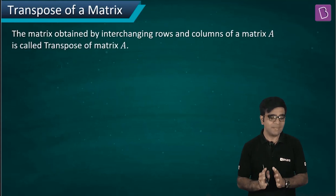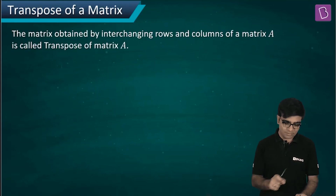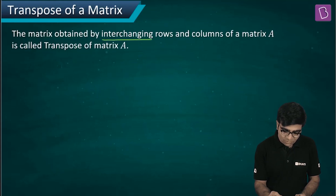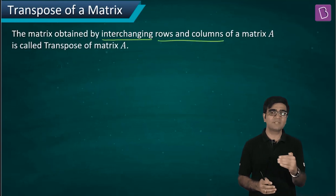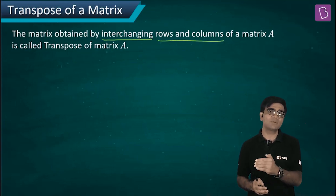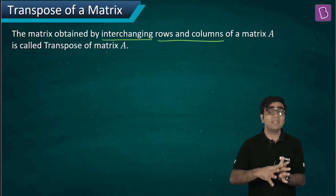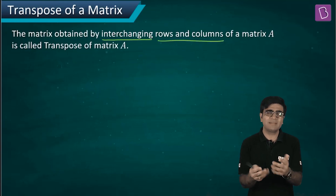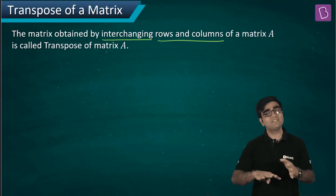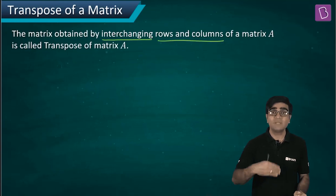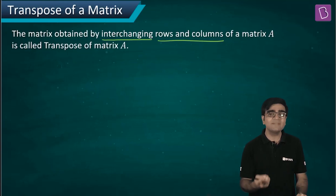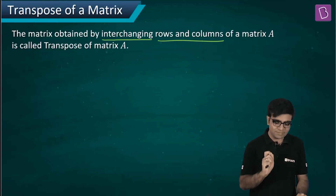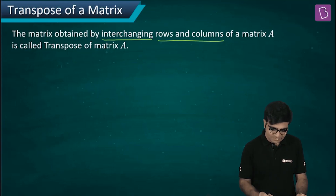Please note the statement: the matrix obtained by interchanging rows and columns. So the first row becomes the first column, the second row becomes the second column, and the third row becomes the third column — if we're talking about a three by three matrix. The new matrix will be called the transpose of the given matrix.